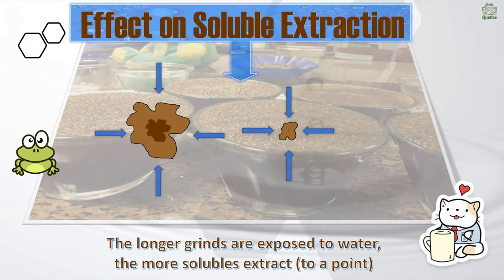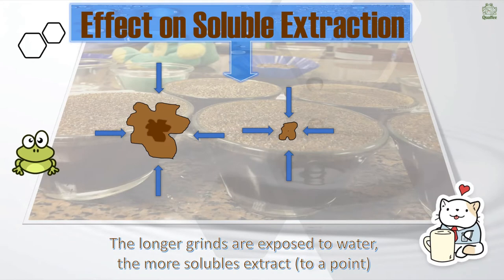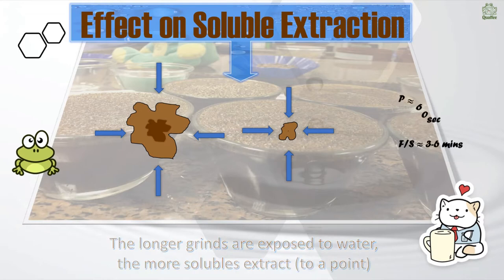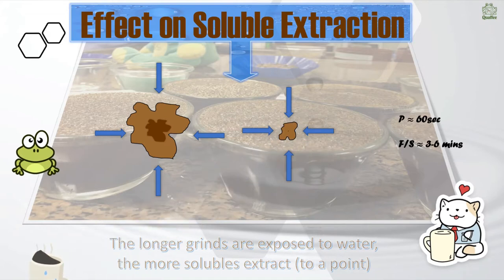The bigger the grind, the less it's going to be extracted. The important thing is you want that soluble goodness out of the coffee. Since boulders are larger they will give up their goodness slower than the fines, and the fines will end up actually over-extracting given enough time.